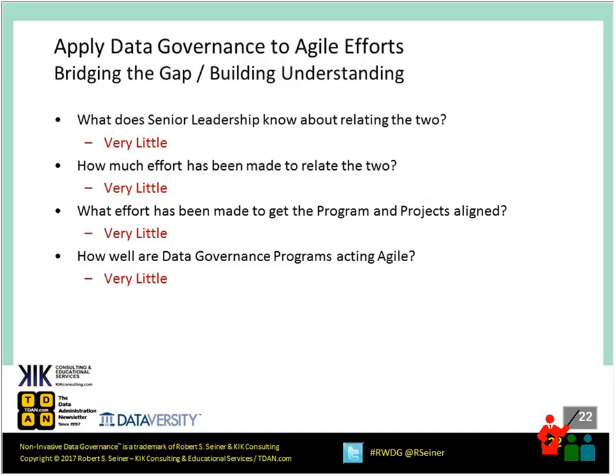How well are our data governance programs acting agile? People involved in agile development often think the data governance people are requesting 18 pages of documentation per every data element — that's an exaggeration, but a lot of agile efforts think data governance is going to slow them down. What can we do as data practitioners to limit what we ask of agile teams so we only ask for the specific things we truly need?